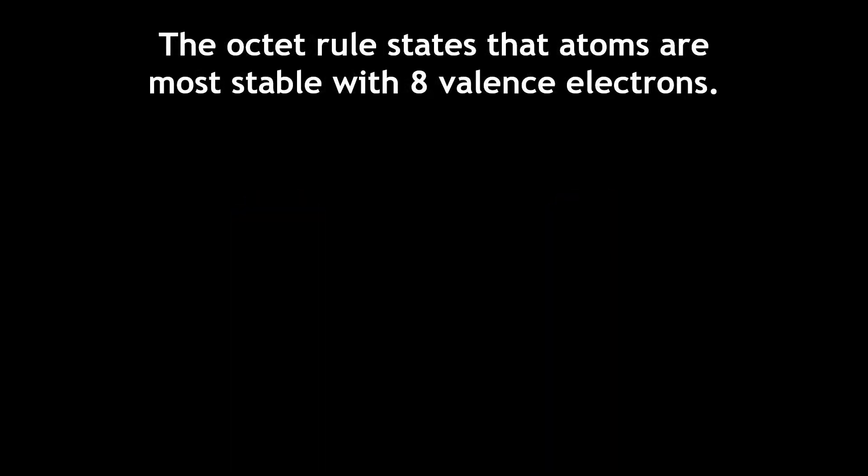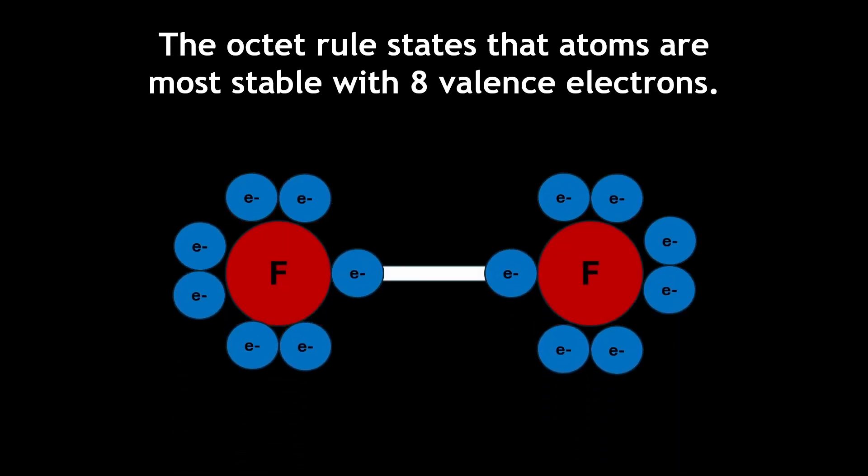Atoms share electrons because of the octet rule, which states that atoms are more stable when they have eight electrons in their valence shell. For example, two fluorine atoms bond together to go from seven to eight valence electrons.